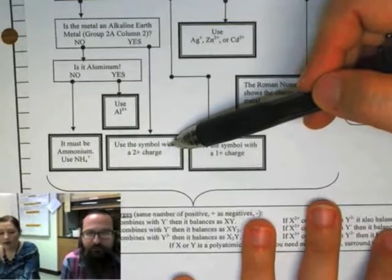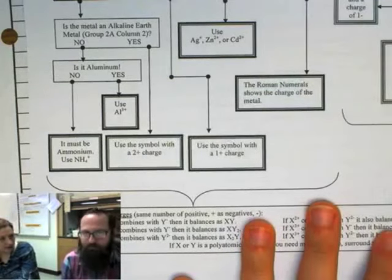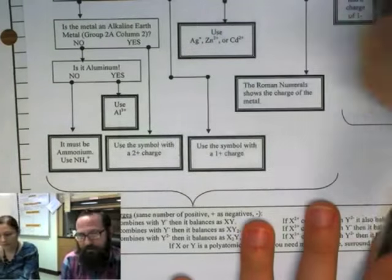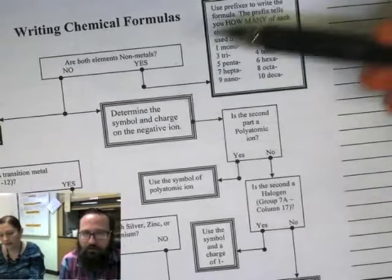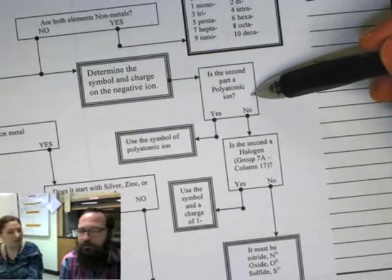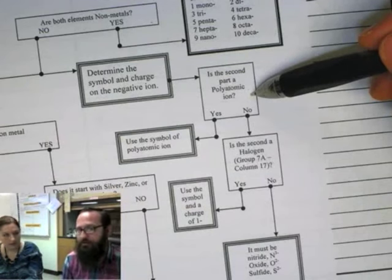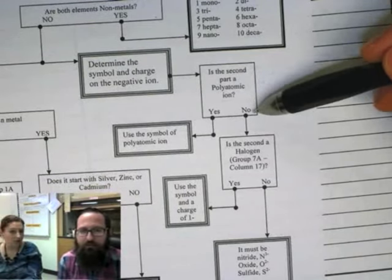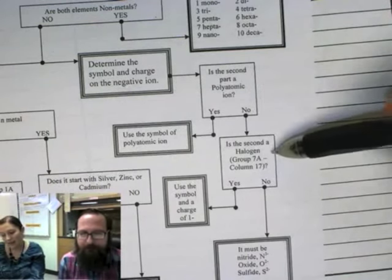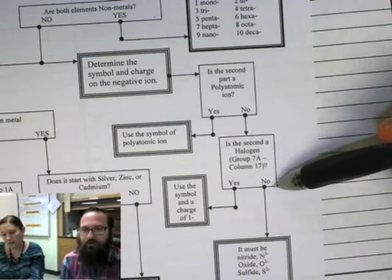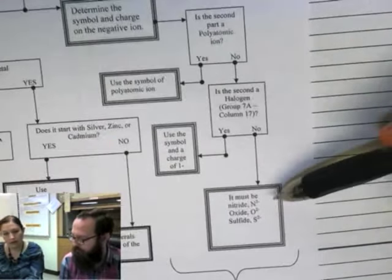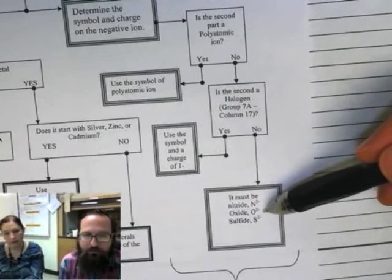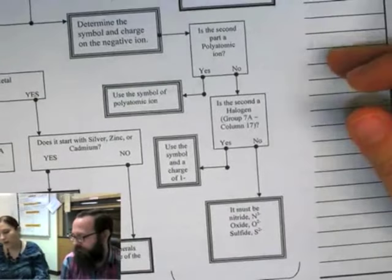I can look it up on the periodic table. It kind of seemed a little bit faster to me, but if I don't have it memorized, I can use it. So let's look at the other side. It says to determine the symbol and charge of the negative ion. So is it a polyatomic? I don't even know what that is. Polyatomic ion - poly means many and atomic is atoms, so it's a bunch of different atoms. So we haven't learned about this one yet. So I'm going to go ahead and say no because we don't know about that. Is it a halogen group 7A? No, oxygen wasn't. So it's got to be either nitride oxide or sulfide, and our problem was oxide. So it's minus two.